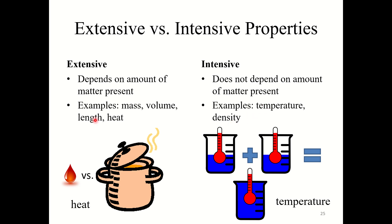Another good example is temperature. Consider the difference between heat and temperature. Heat is a form of energy. Think about a small teacup with boiling water versus a large pot with boiling water — the temperature of both is 100 degrees Celsius, so temperature is an intensive property; it does not depend on the amount of matter present. However, heat is an extensive property. It takes much more heat to heat up a giant pot of water than a small teacup, because there's more matter present.